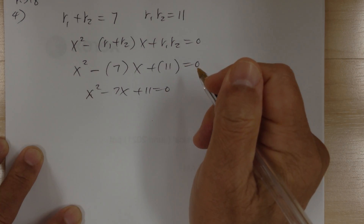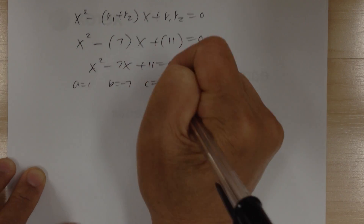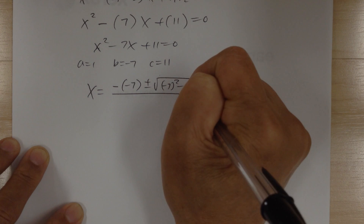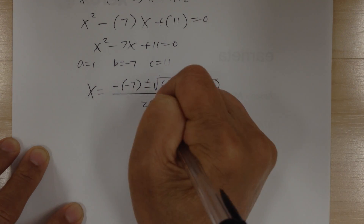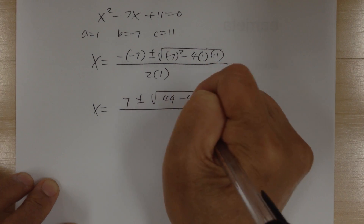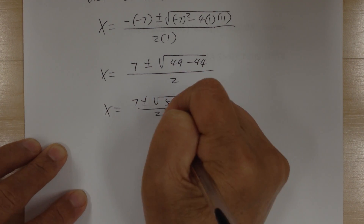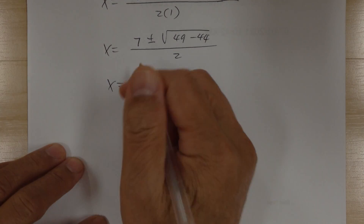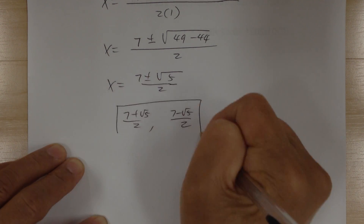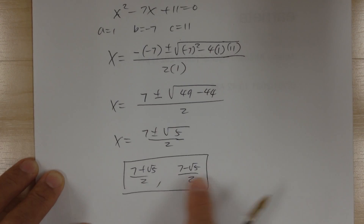Solve by the quadratic formula with a = 1, b = −7, c = 11. So x = (7 ± √(49 − 44)) / 2 = (7 ± √5) / 2. The two numbers are (7 + √5)/2 and (7 − √5)/2. You can verify: adding gives 7, and multiplying gives 11.